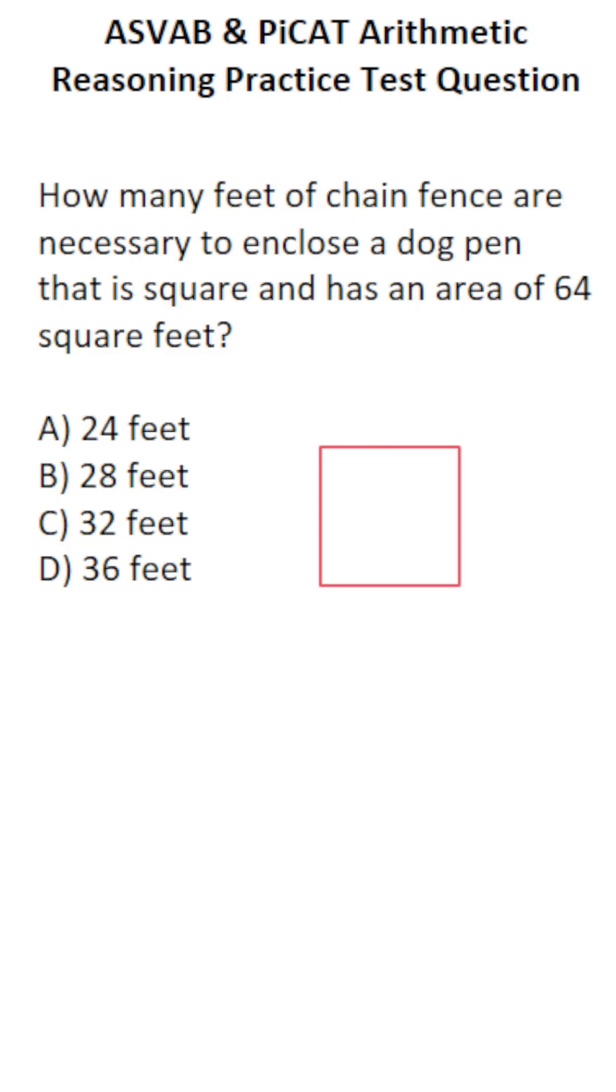In this case, we're given the area of a square dog pen. We want to find how many feet of chain fence we need to enclose this dog pen. So we're going to have to add up this side, this side, this side, and this side of the dog pen to get the total amount of feet we need.